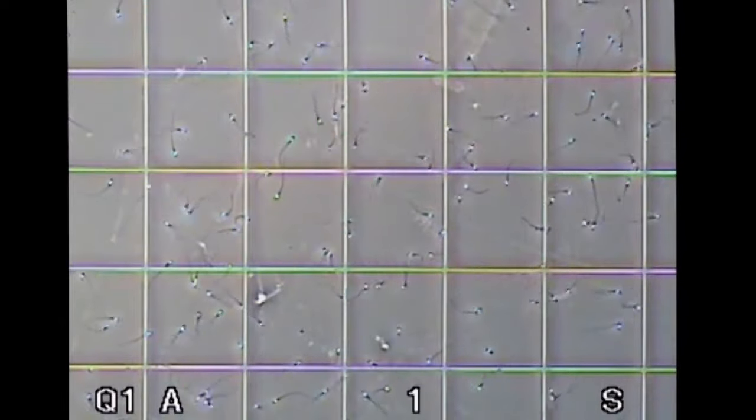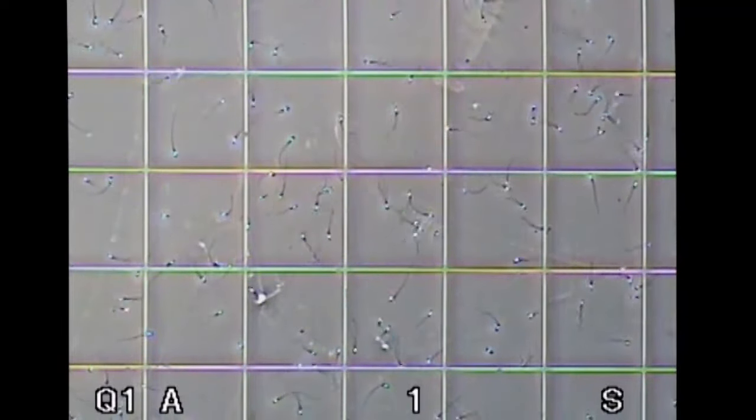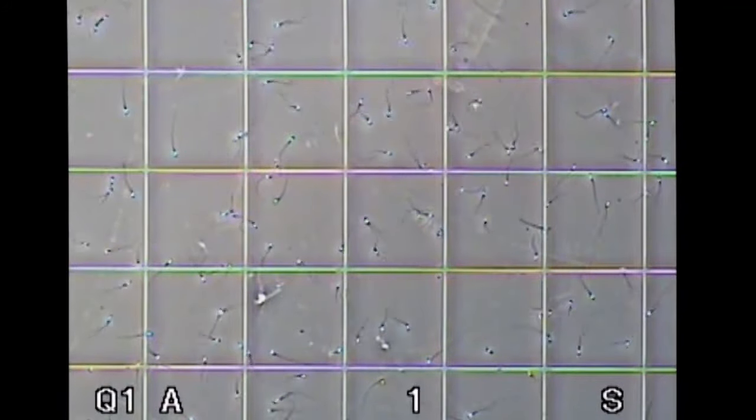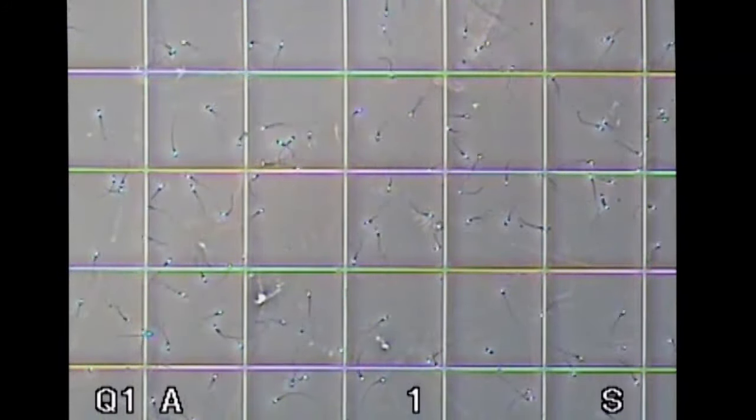In order to determine the sperm count on this type of chamber, we count the number of sperm present in a standard number of squares and use a formula to calculate the sperm concentration.